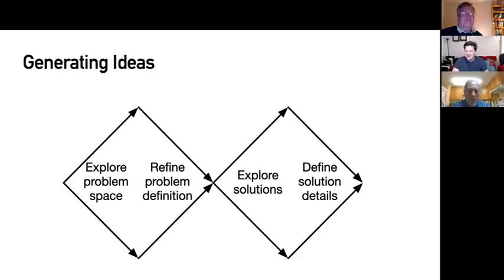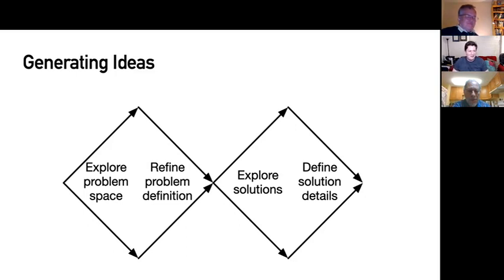Once you've understood what the problem really is, you explore solutions — there might be seven or eight different approaches. You look at trade-offs and define which you think is the best solution. This process can be very quick or quite involved — we had one where someone said 'we'd like to expand into a new market' and that's a big idea not easily solved in software. The double diamond — go wide, go narrow, go wide, go narrow — is a really powerful way of defining your problems and solutions.